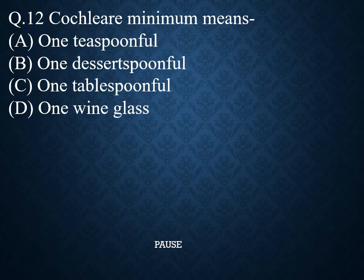Question 12. 'Cochlear minimum' means. Option A: 1 teaspoonful. Option B: 1 dessertspoonful. Option C: 1 tablespoonful. Option D: 1 wine glass. And the right answer is 1 teaspoonful. So 'cochlear minimum' means 1 teaspoonful — most important MCQ.